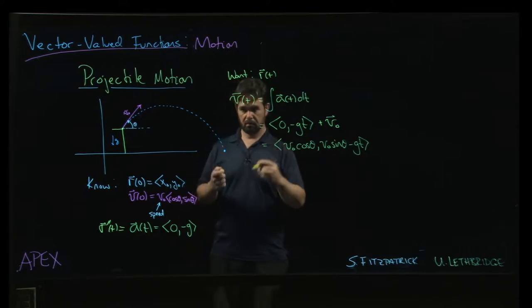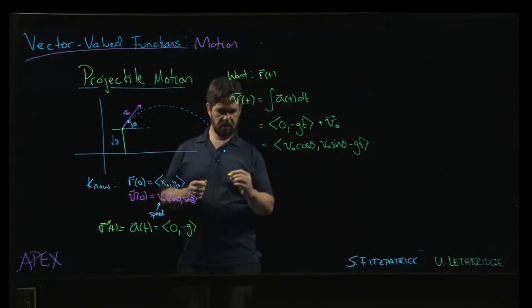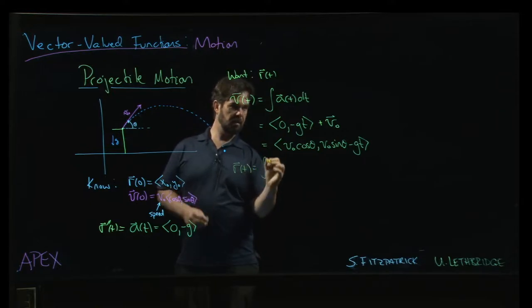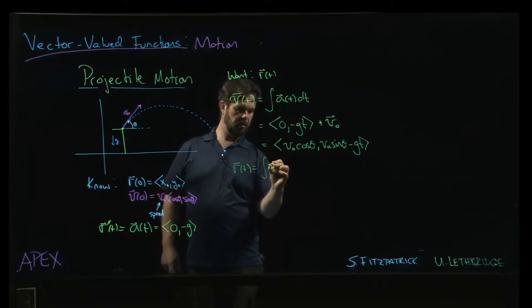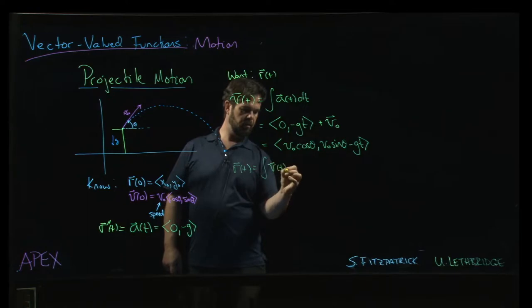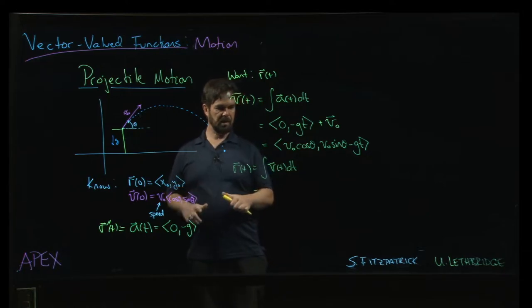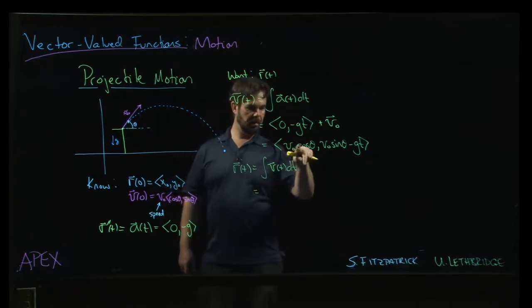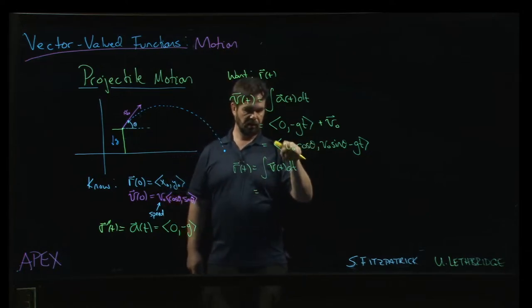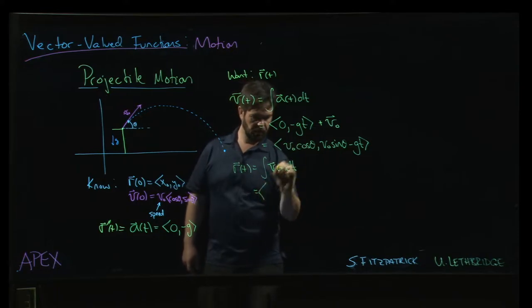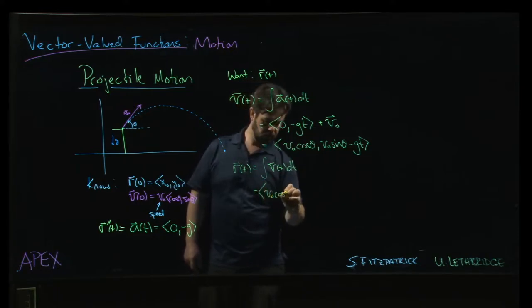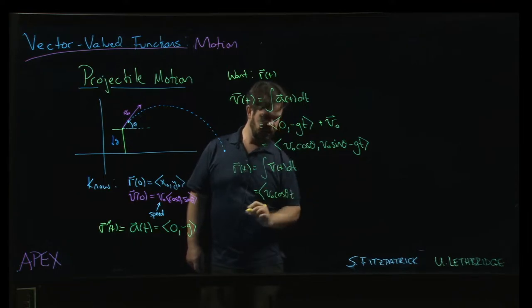Now that you've got velocity, you can get position. r of t will be the anti-derivative of v of t. Remember, theta is a constant here - v naught is a constant - so it's just going to be in the first part v naught cos theta times t.